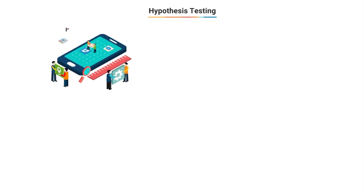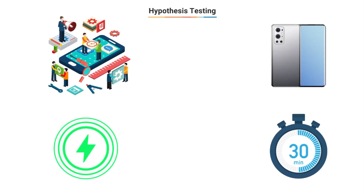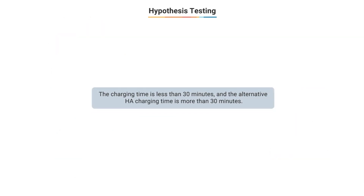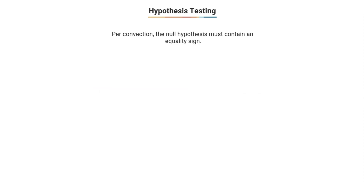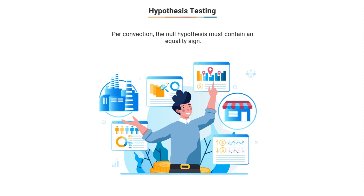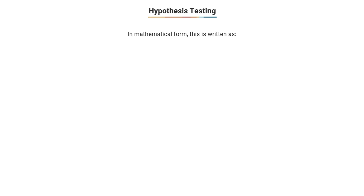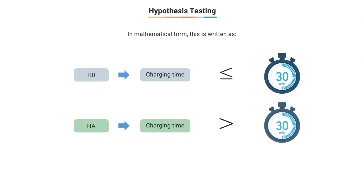Suppose the claim of the engineers was that the Max phone charges in less than 30 minutes. Then H0 becomes: charging time ≤ 30 minutes, and Ha becomes: charging time > 30 minutes. One of these events must contain the equality sign, otherwise they will not be complement events. The general rule followed by all statisticians is that the null hypothesis always contains the equality sign. So mathematically: H0: charging time ≤ 30 minutes; Ha: charging time > 30 minutes.